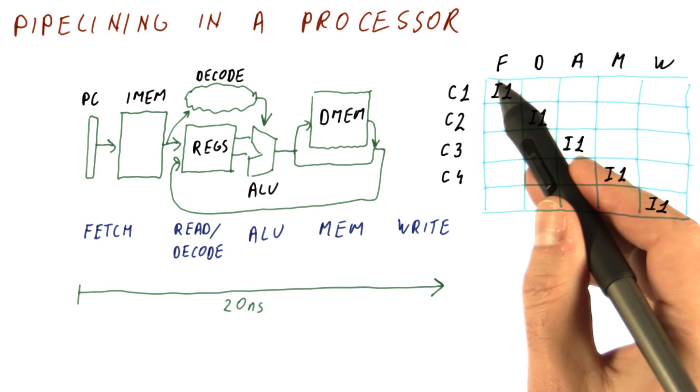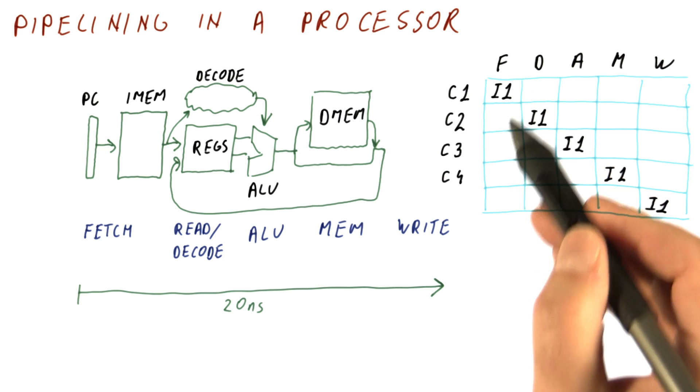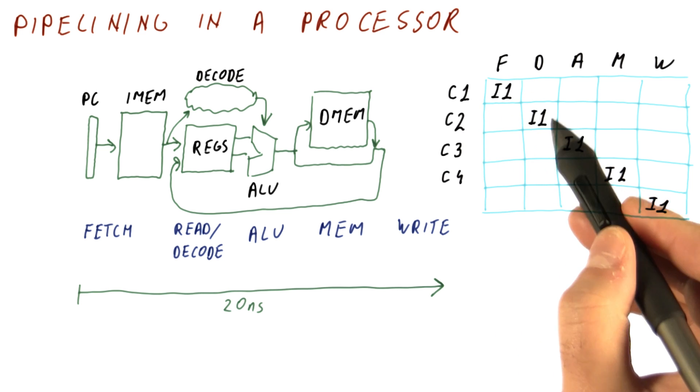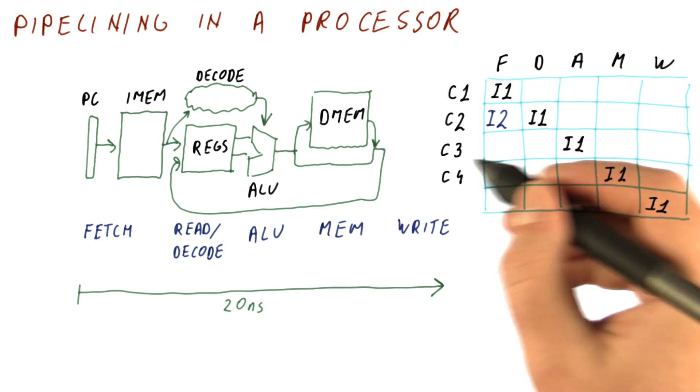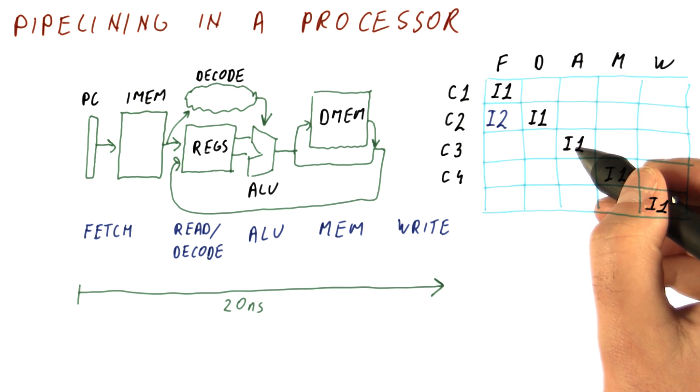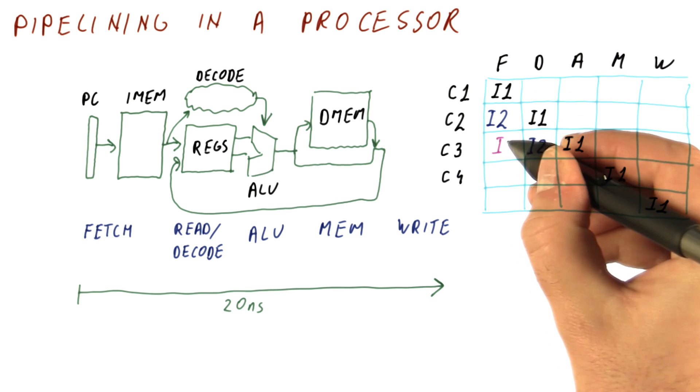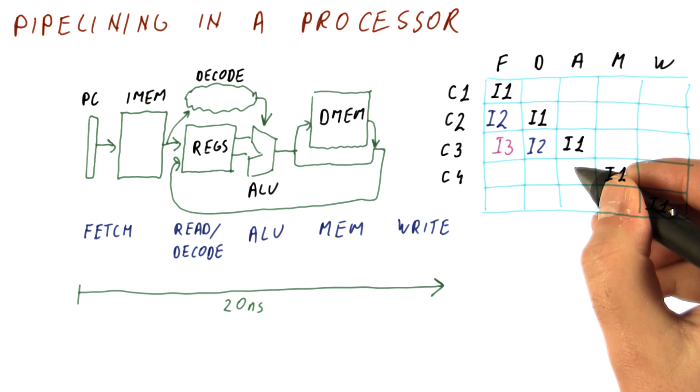If we apply the idea of pipelining, in cycle one we're still fetching instruction I1. In cycle two, we'll be decoding instruction I1, but we can begin fetching instruction I2. When instruction I1 moves to do the ALU operation, I2 can move to be decoded and I3 can be fetched. In the fourth cycle,